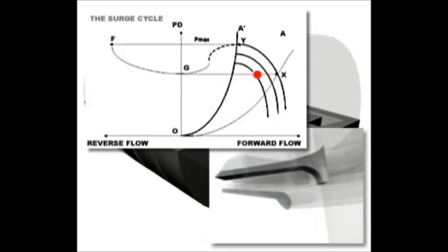Forward flow will start again and the cycle will repeat itself until the operating conditions change or manual intervention takes place. This phenomenon is called surge. These reversals can cause severe damage as well as decrease the compressor and process efficiency dramatically.